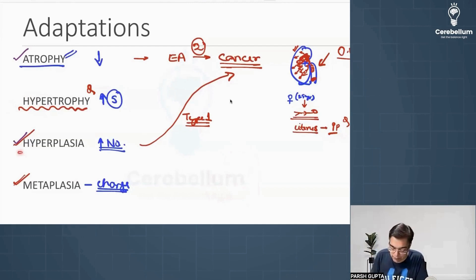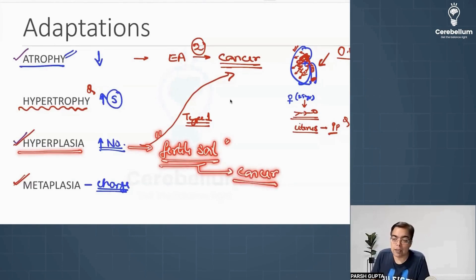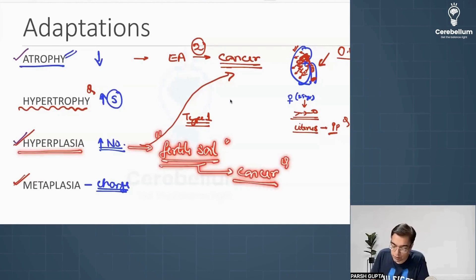Hyperplasia — increase in number — is very important because hyperplasia is going to be given the name of a 'fertile soil' for the development of cancer. That is a one-liner question. Hyperplasia is an example of fertile soil for the development of cancer in the future, so this patient is going to be having a high risk for development of cancer.